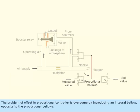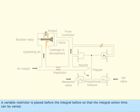The problem of offset in proportional controller is overcome by introducing an integral bellow, opposite to the proportional bellows. A variable restrictor is placed before the integral bellow so that the integral action time can be varied.